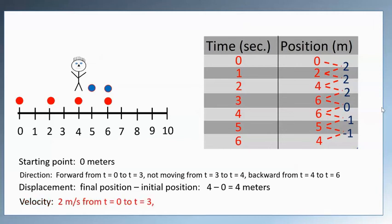All right, so between three seconds, he had a velocity of two. Between three and four seconds, he had a velocity of zero. And then between four and six seconds, he had a velocity of negative one going one meter per second backwards.